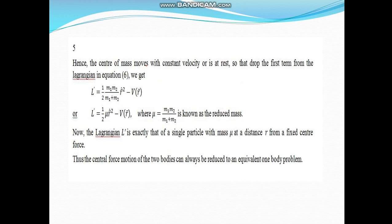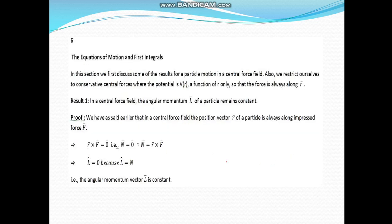Hence, the center of mass moves with constant velocity or is at rest. Drop the first term from the Lagrangian in equation 6 to get L dash equals half mu r dot square minus V, where mu is known as reduced mass. This Lagrangian L dash is exactly that of a single particle with mass mu at a distance r from a fixed center force. Thus, the central force motion of two bodies can always be reduced to an equivalent one-body problem.